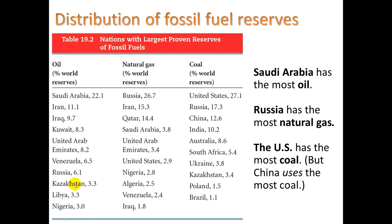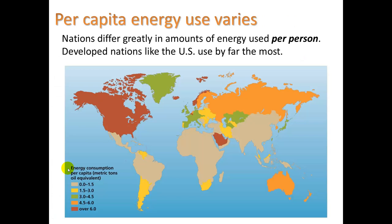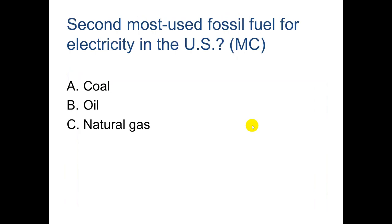Per capita energy use: the US, Canada, and the Middle East — specifically Saudi Arabia — are the biggest users of energy. Saudi Arabia is sitting on top of a ton of oil under the ground. No surprise that Africa is using very little. This graph is probably from the mid-2000s, which is when the textbook was published.